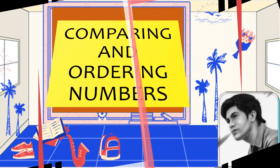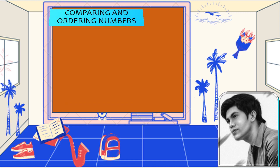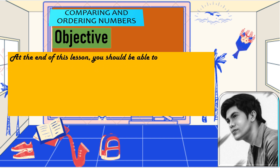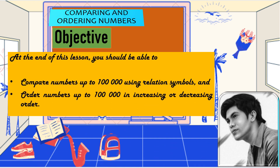Welcome to our class about comparing and ordering numbers. Our objectives for this day: at the end of this lesson you should be able to compare numbers up to 100,000 using relation symbols, and order numbers up to 100,000 in increasing or decreasing order. Now let's proceed to the main topic — relation symbols.